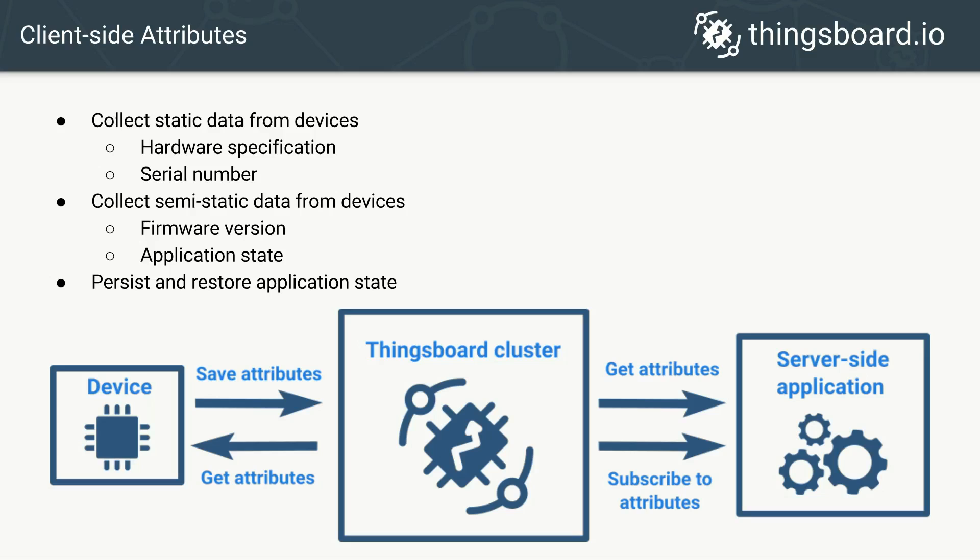As an example of client-side attributes we can use firmware version and serial number. The serial number is definitely a static attribute, while the firmware version is a semi-static attribute that can change occasionally. Device applications can both report and fetch data of the client-side attributes. This may be useful for some primitive devices that do not have local storage — they can report the application state and then fetch it after the next startup.